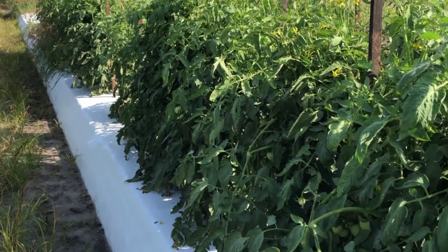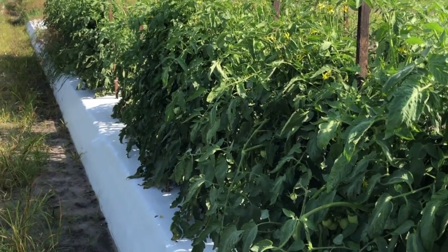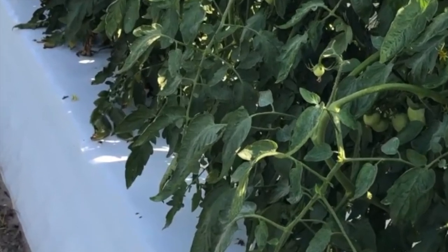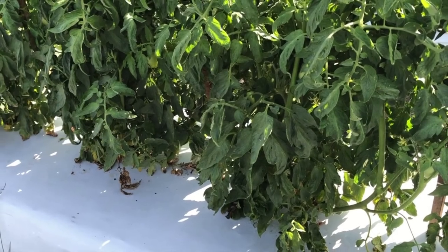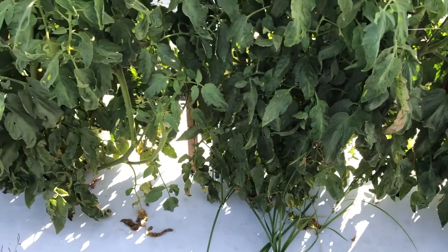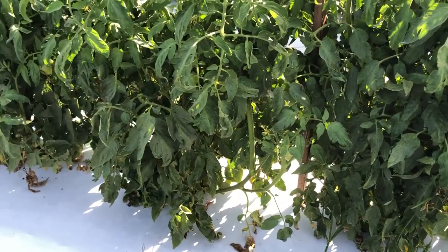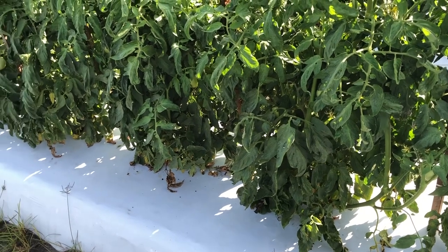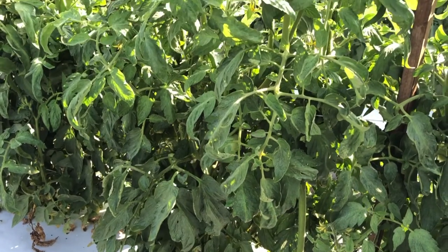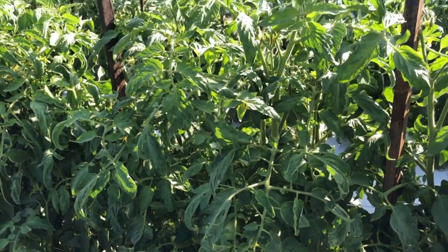The next image is at 350 pounds — plants look great, fairly decent nutsedge control. The last rate is 500 pounds per acre, which is above the label rate. You notice pretty good control, though as we saw in the graph, we did not get 100% nutsedge control even at 500 pounds per acre. But we've had a steady decrease, and as visible in this plot, pretty good control with plants still looking very good.